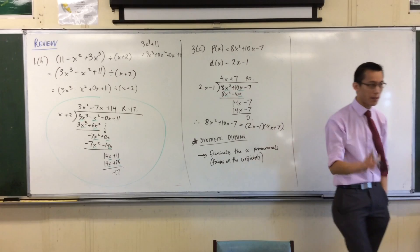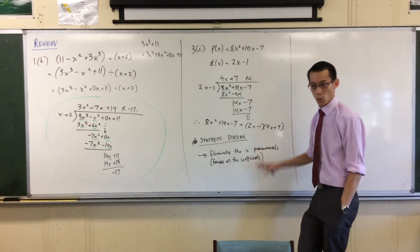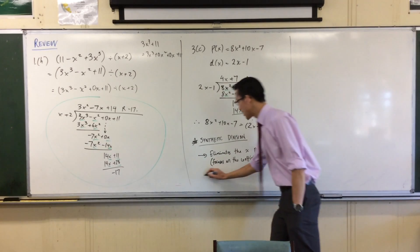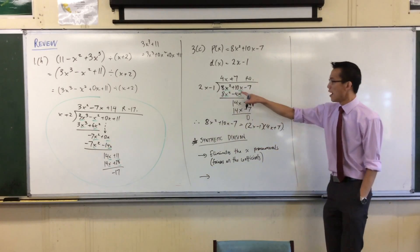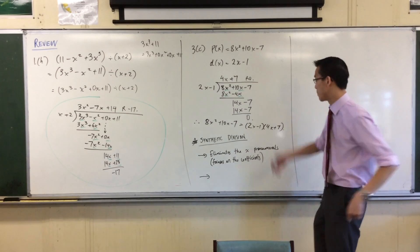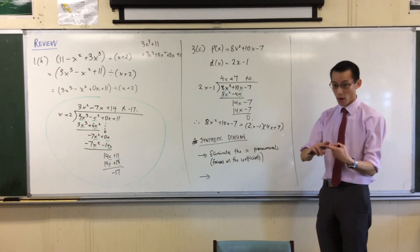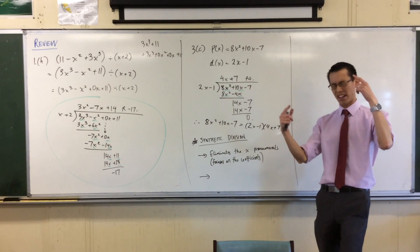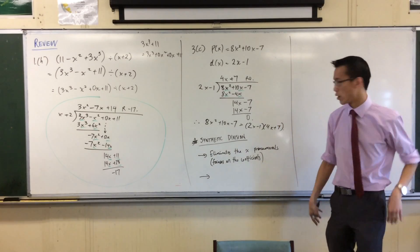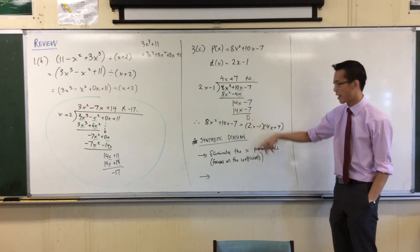Now, there's one other advantage that synthetic division has, which is not only do you not have to write all the x's, which immediately makes this process like twice as fast, but it also, do you remember, I keep on coming up against, I keep hitting double negatives. Do you notice that? It's like, I'm taking away a negative, taking away a negative. Not only is that slower, having to write a double negative as a plus, it's also very error prone.